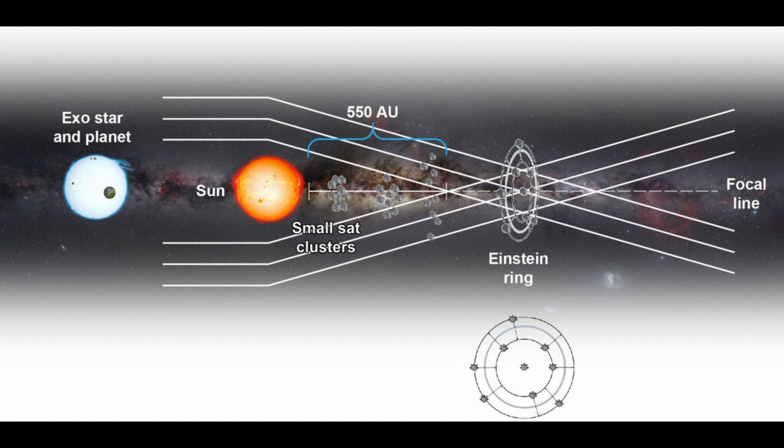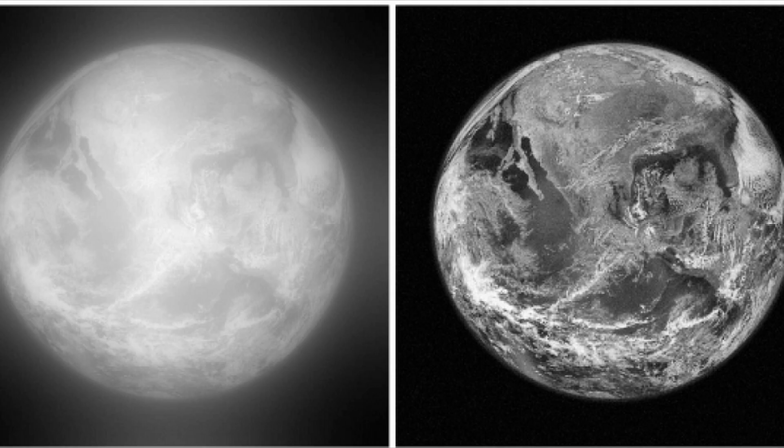Light from other planets around other stars on the other side of the Sun are focused onto those telescopes. The image is sharp, but in an Einstein ring. Computers will convert that image so we can see it. We will see continents, oceans, even lakes and even islands.